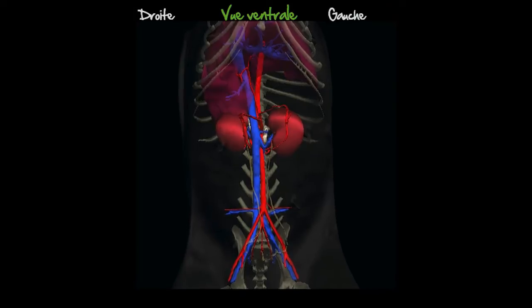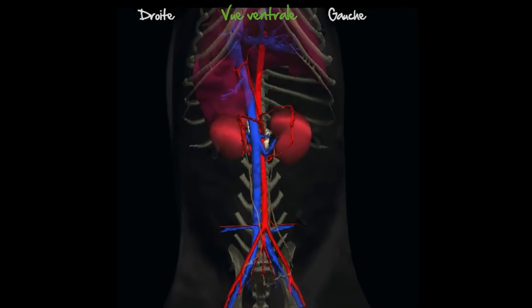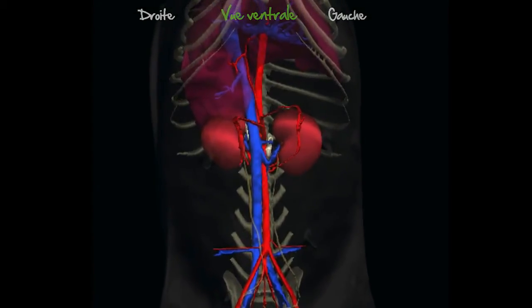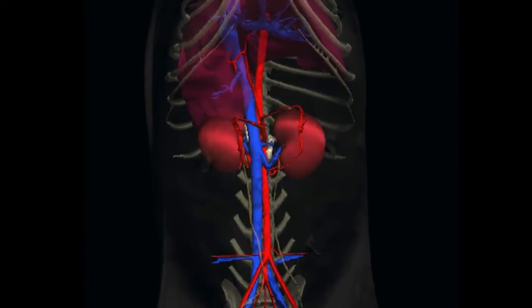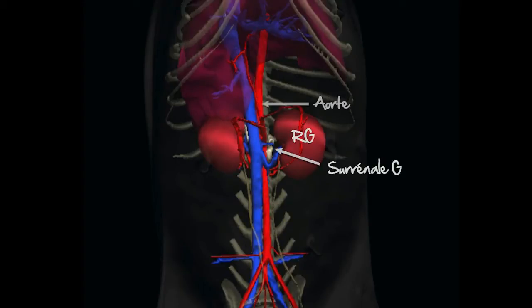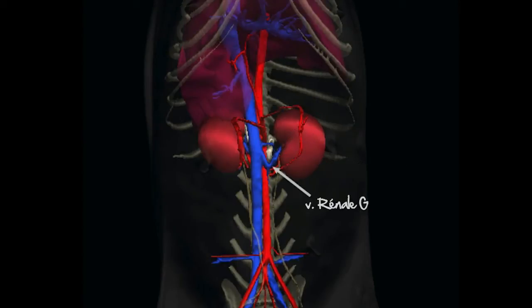Comme leur nom l'indique, les glandes surrénales sont à proximité des reins, dans l'espace rétropéritonéal de l'abdomen dorsal. La surrénale gauche est située médialement et dorsalement au rein gauche, bordant la face latérale de l'aorte, tout juste crânialement à la veine rénale gauche.